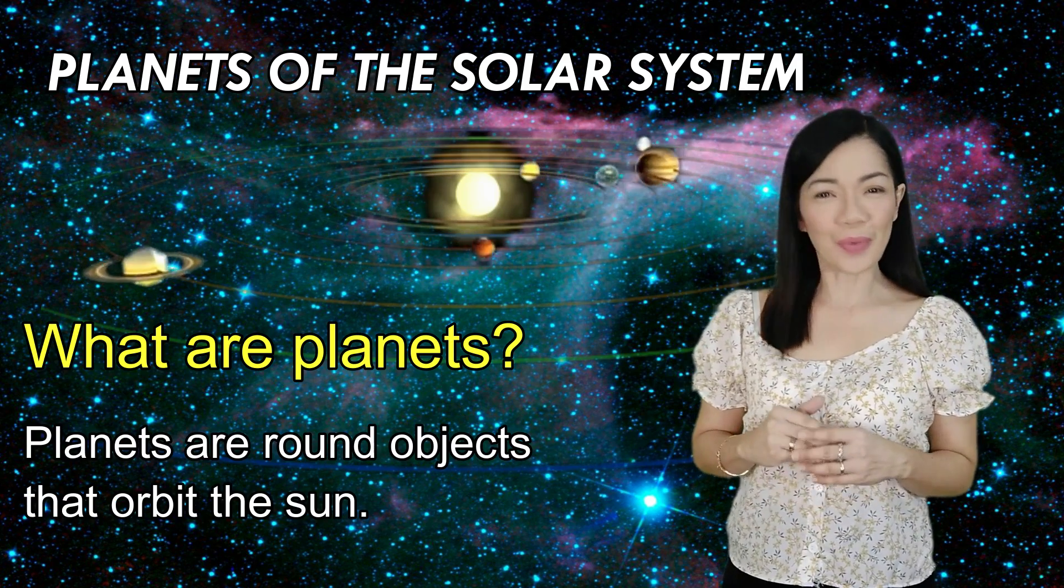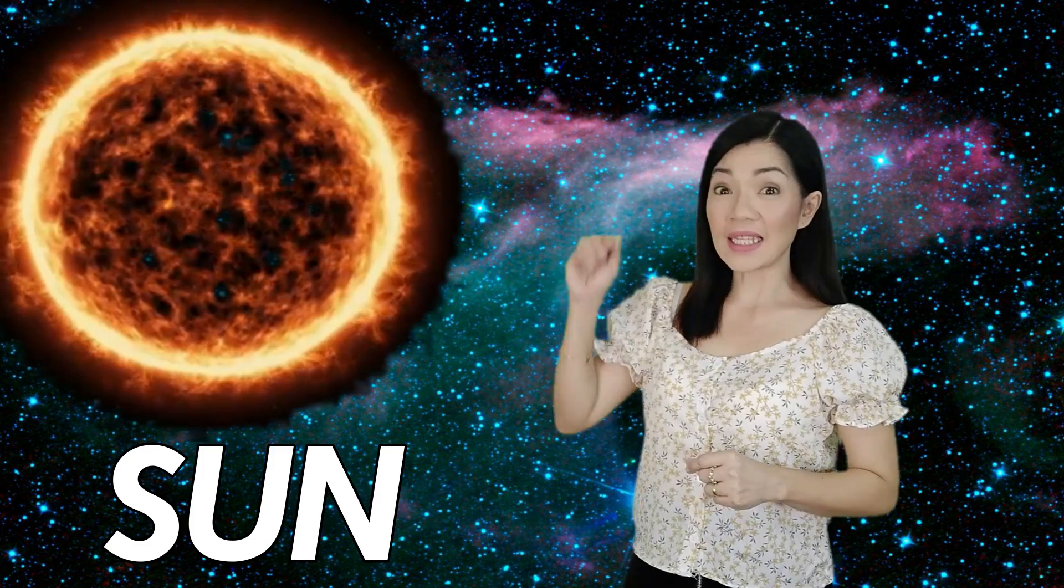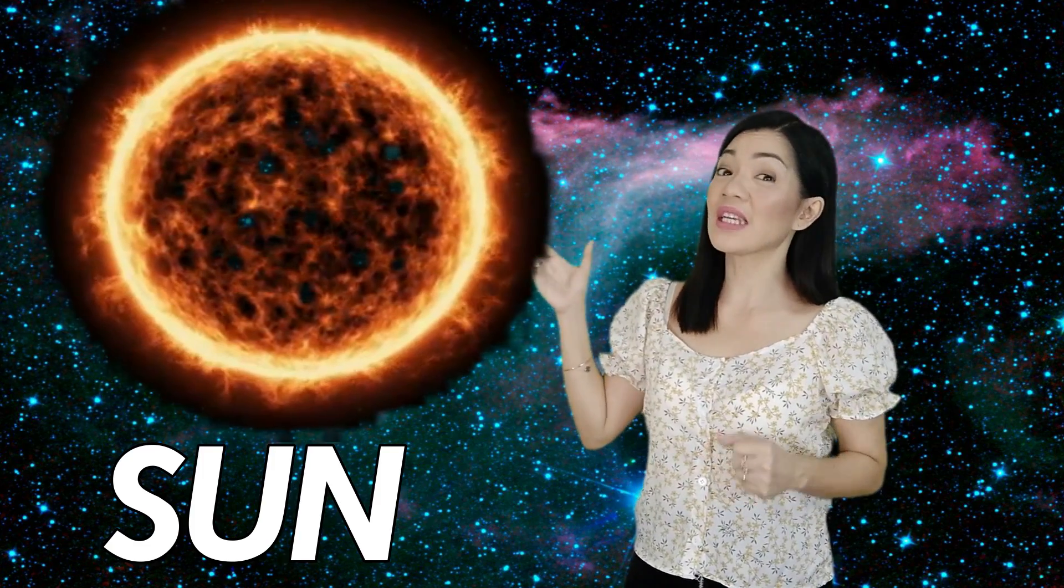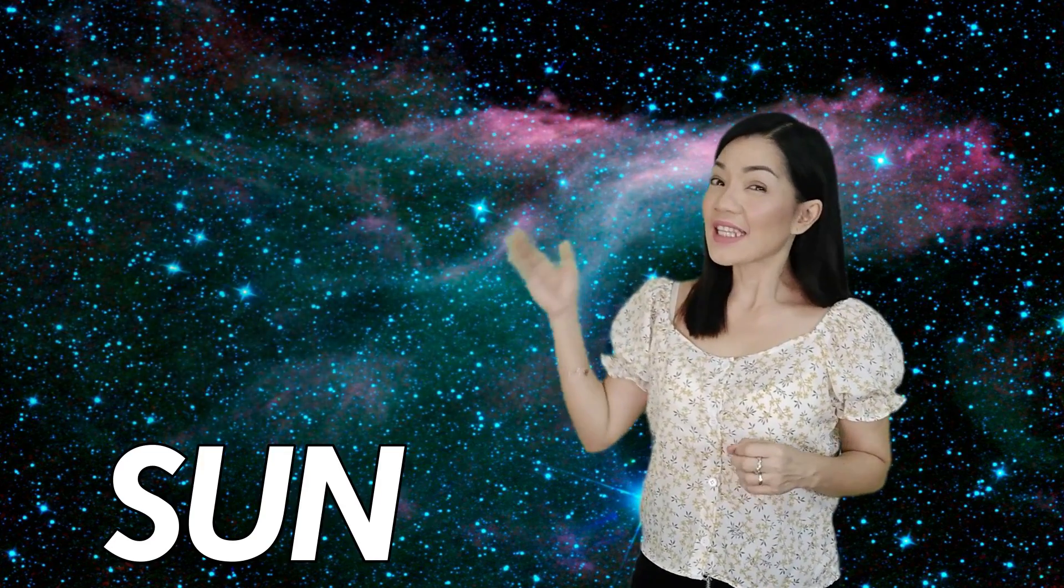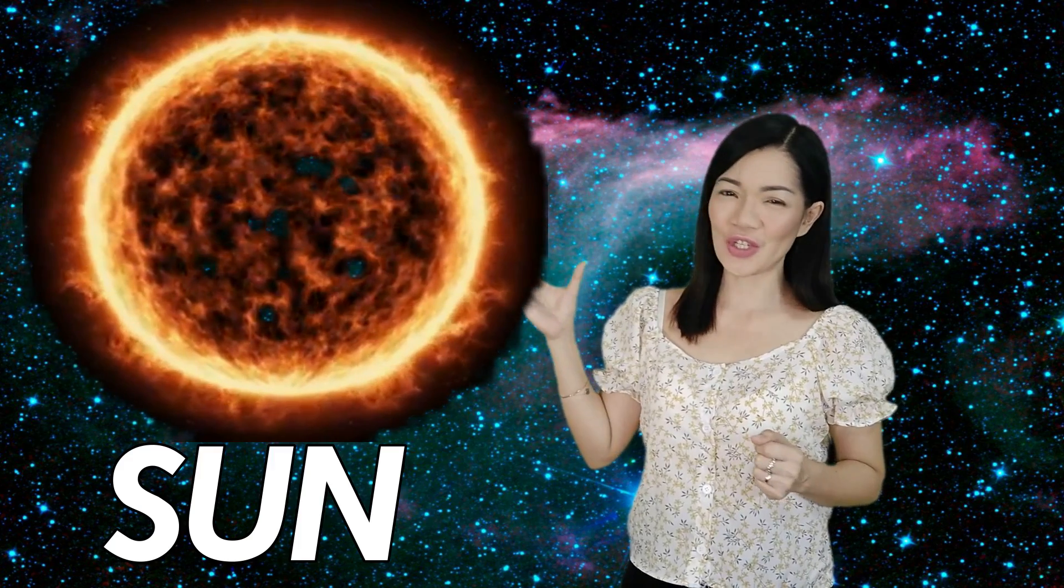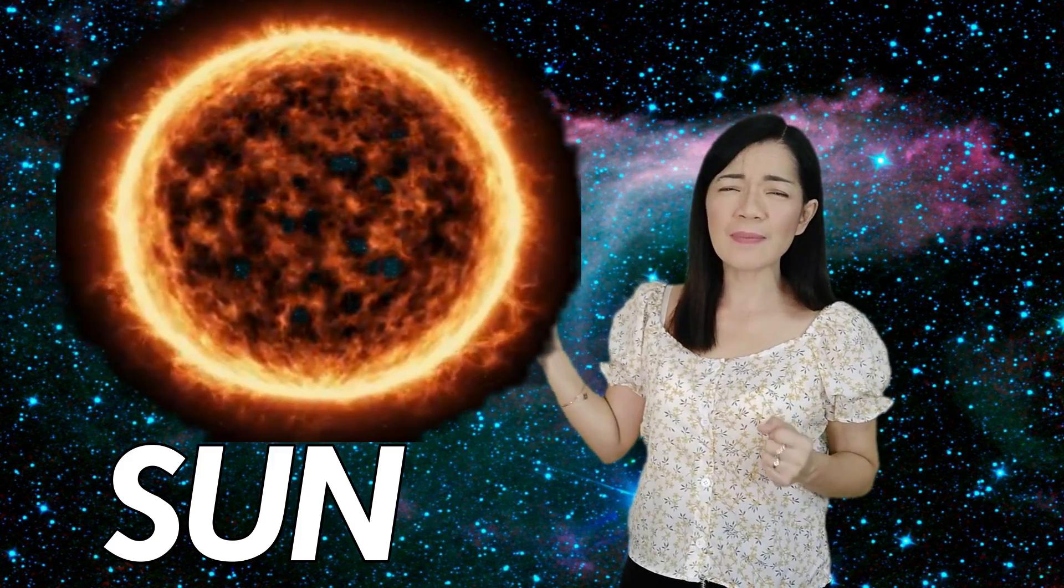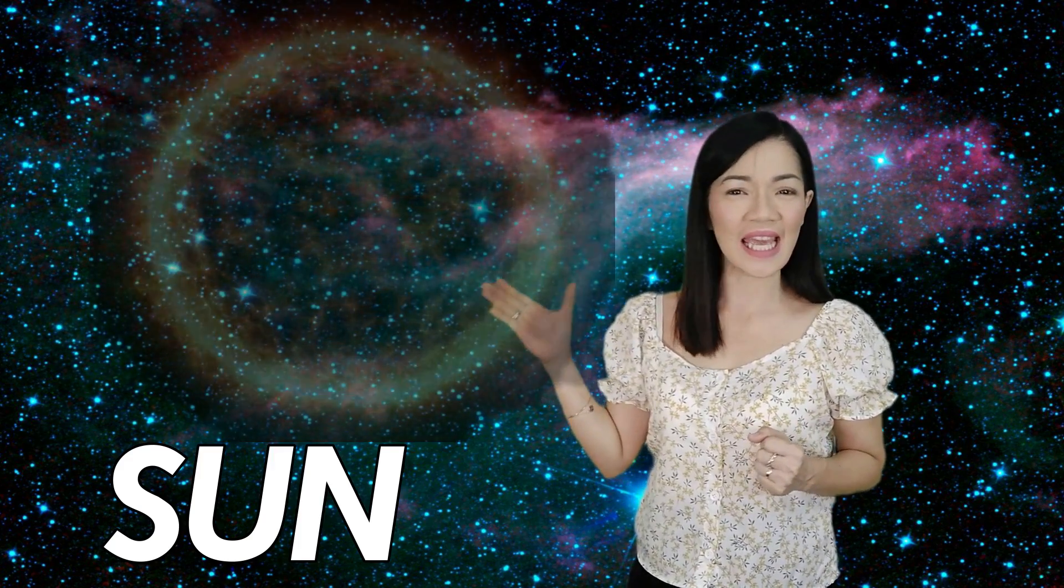Planets are round objects that orbit the sun. Here's a picture of the sun. It's the largest star in the solar system. And as you can see, there's a ring around the sun. And we call them solar flares shooting out of the sun. Absolutely amazing and stunning!